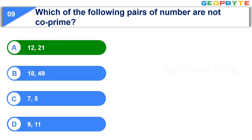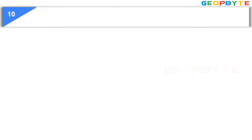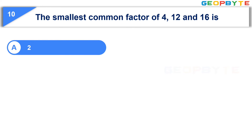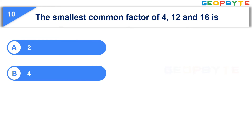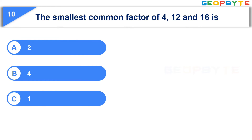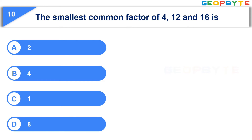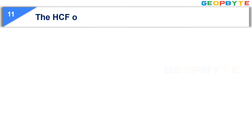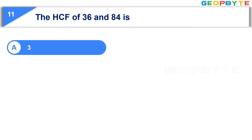The tenth question is: The smallest common factor of 4, 12, and 16 is — Option A: 2, Option B: 4, Option C: 1, Option D: 8. Your time starts now. Your time is up and the correct answer is Option C, 1.